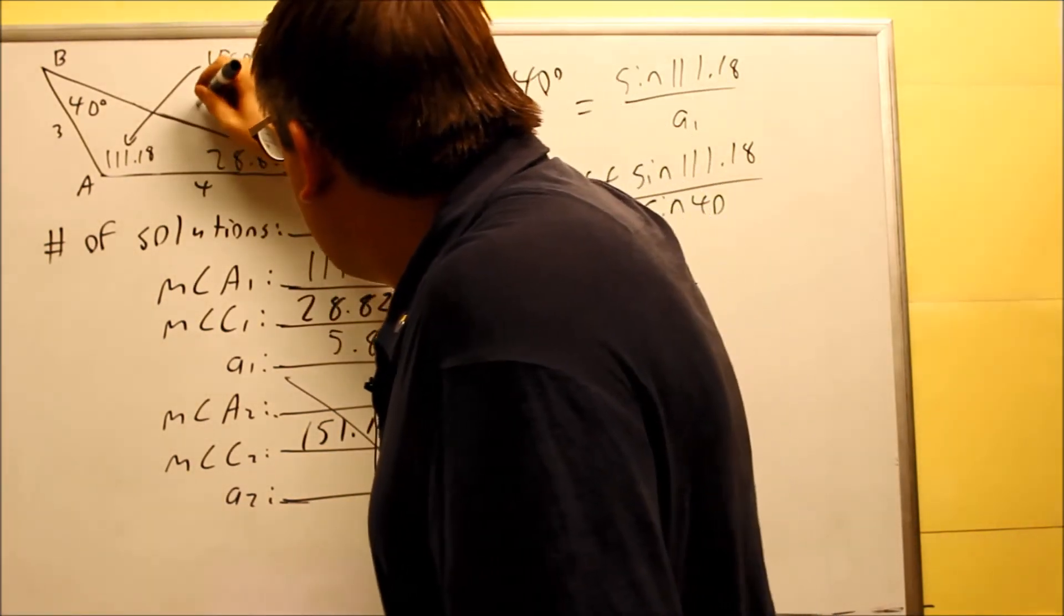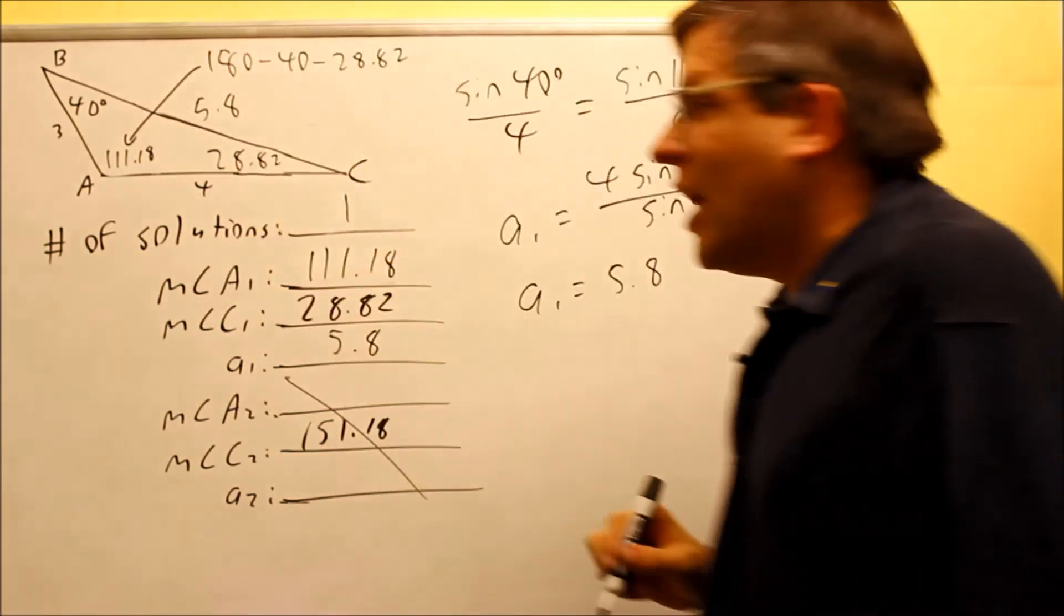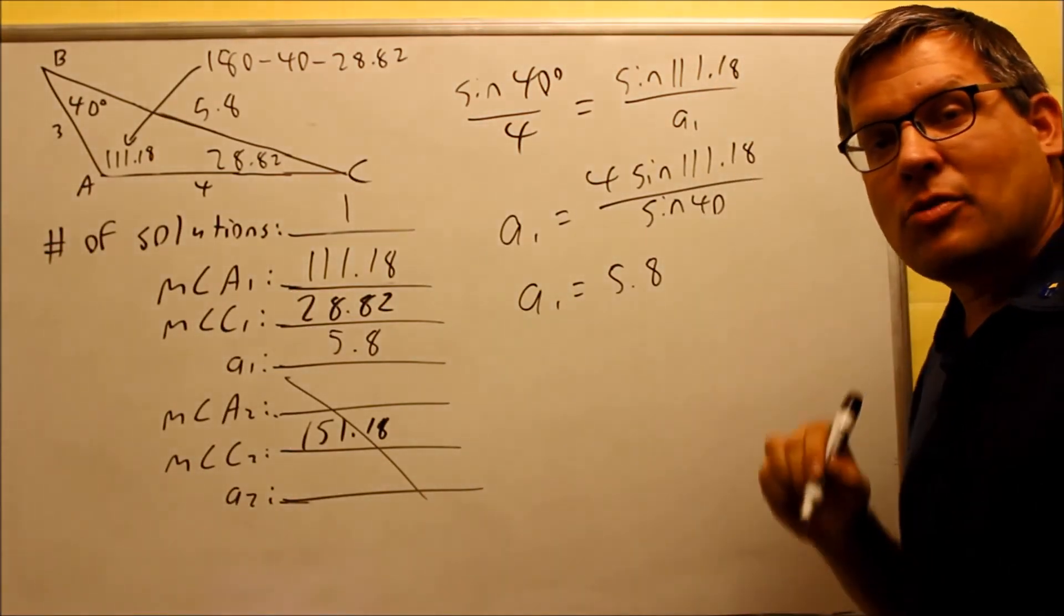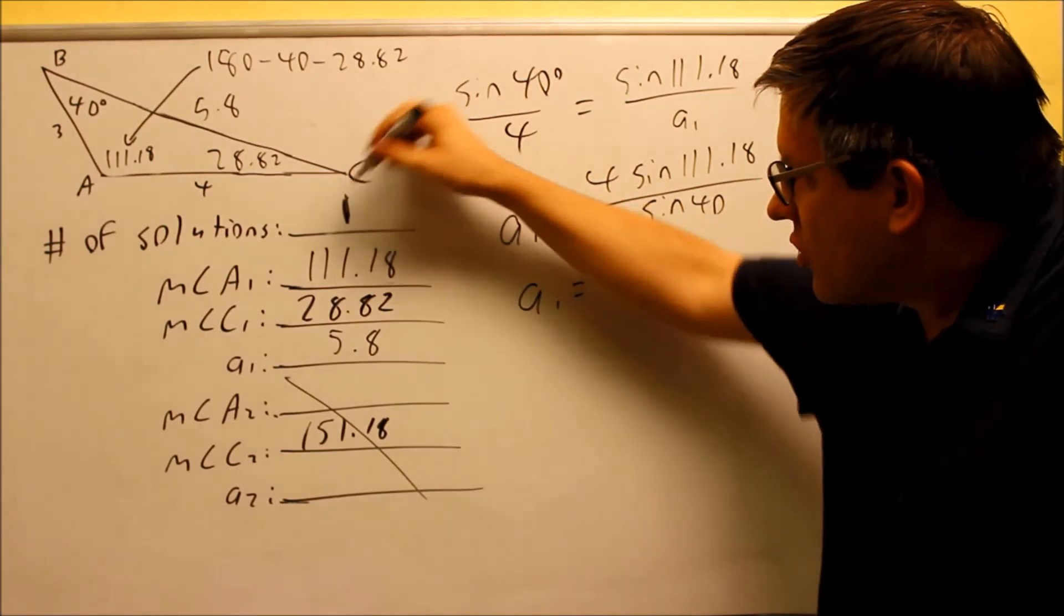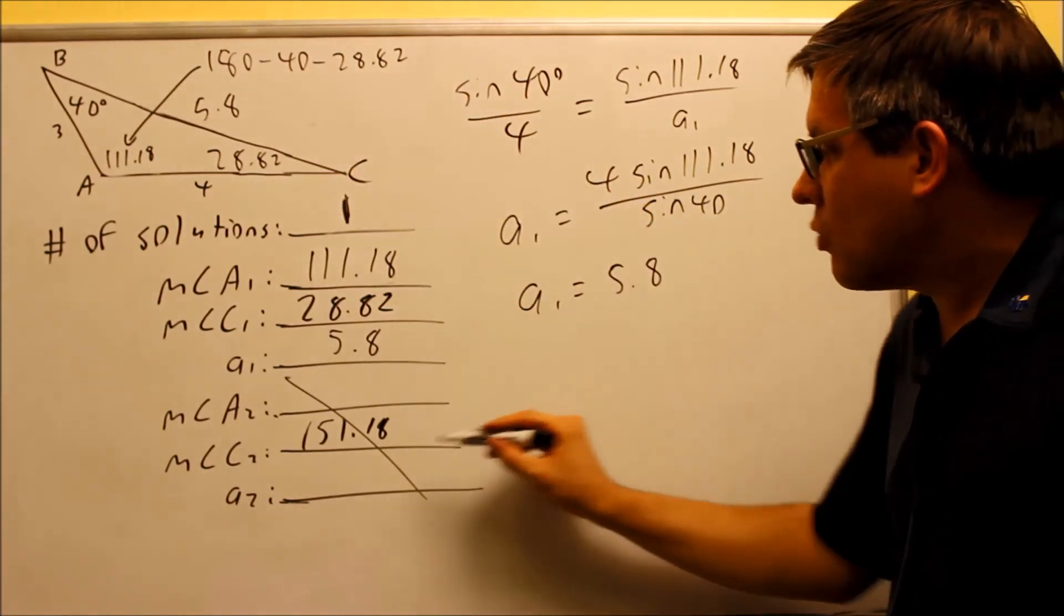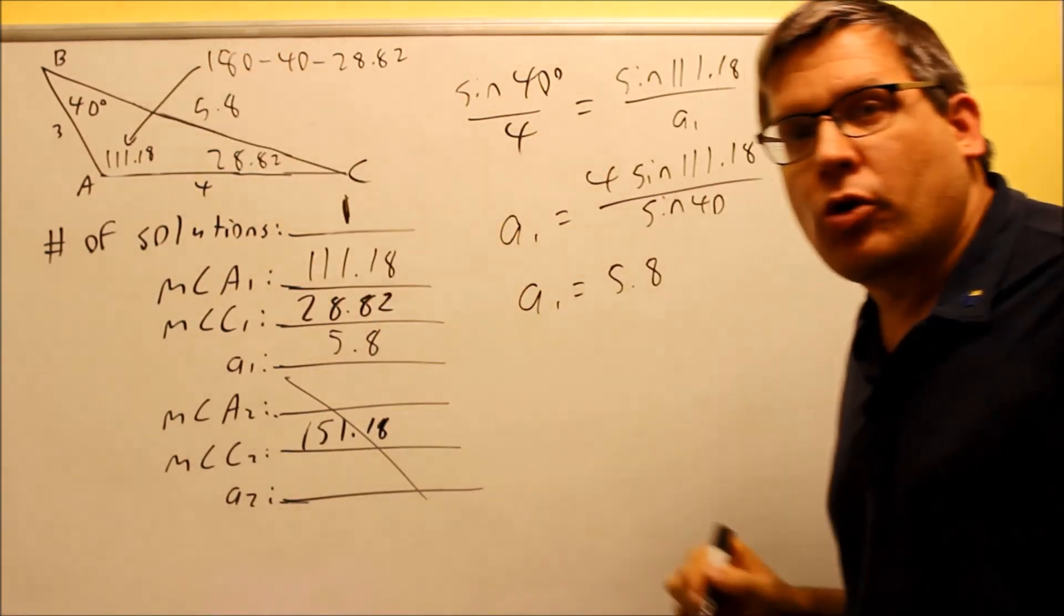So now I can go ahead and put that in 5.8 here. I have all the sides and all the angles found. So my triangle now is solved. We only have one solution. One solution on this one. Again, because 151 added to 40 was more than 180.